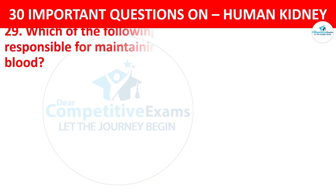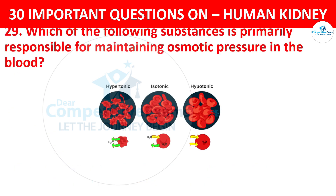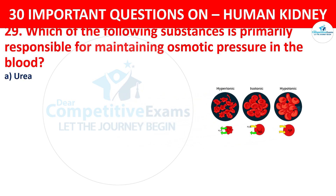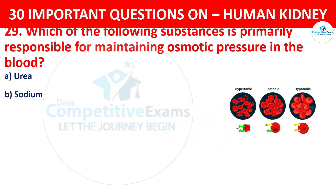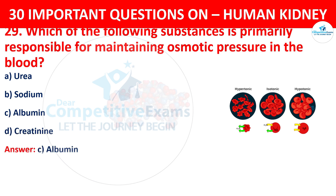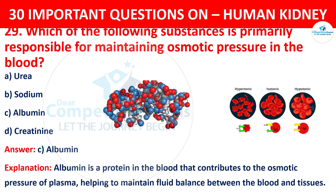Question number 29. Which of the following substances is primarily responsible for maintaining osmotic pressure in the blood? The options are urea, sodium, albumin, or creatinine. The correct answer is C, that is albumin. Albumin is a protein in the blood that contributes to the osmotic pressure of plasma, helping to maintain fluid balance between blood and tissues.